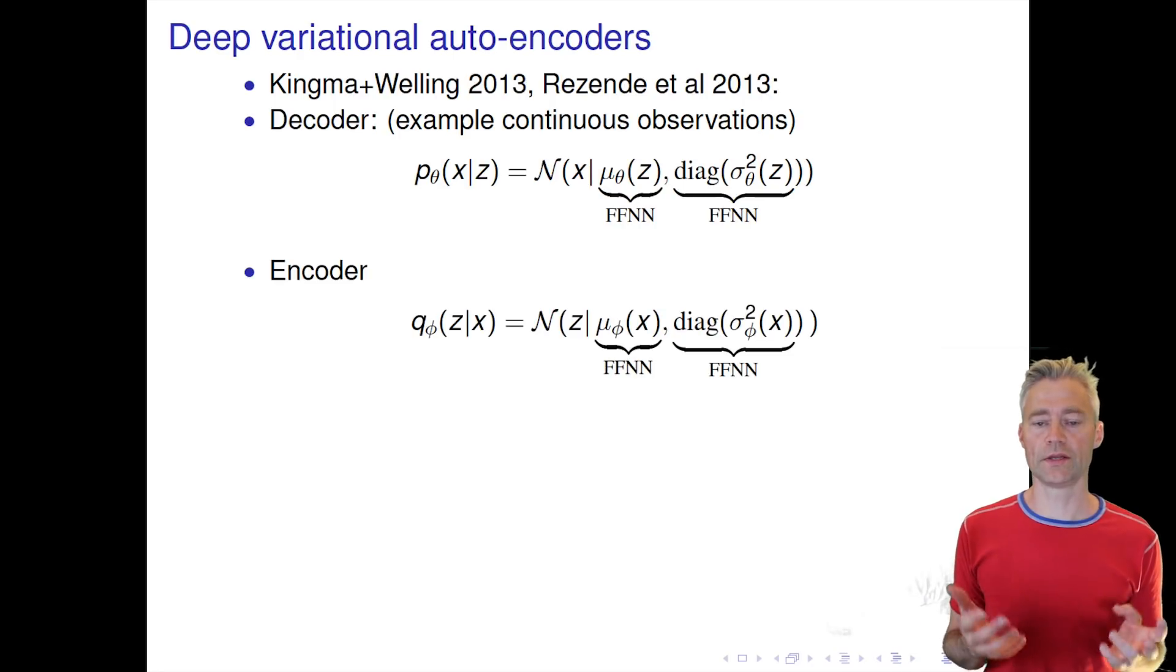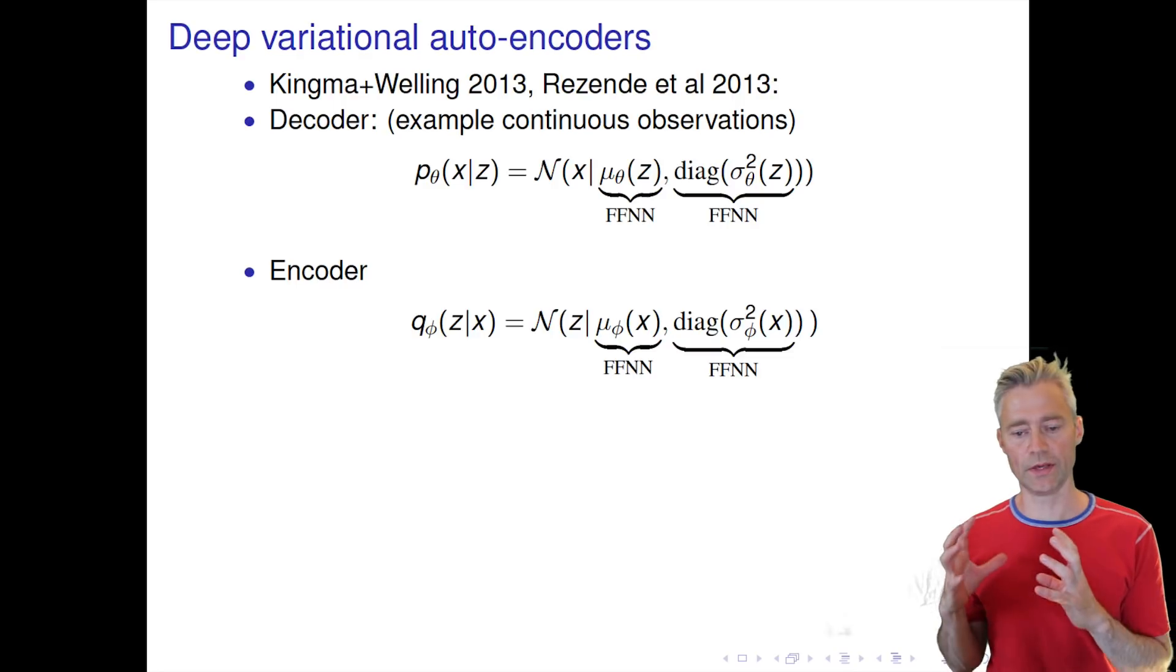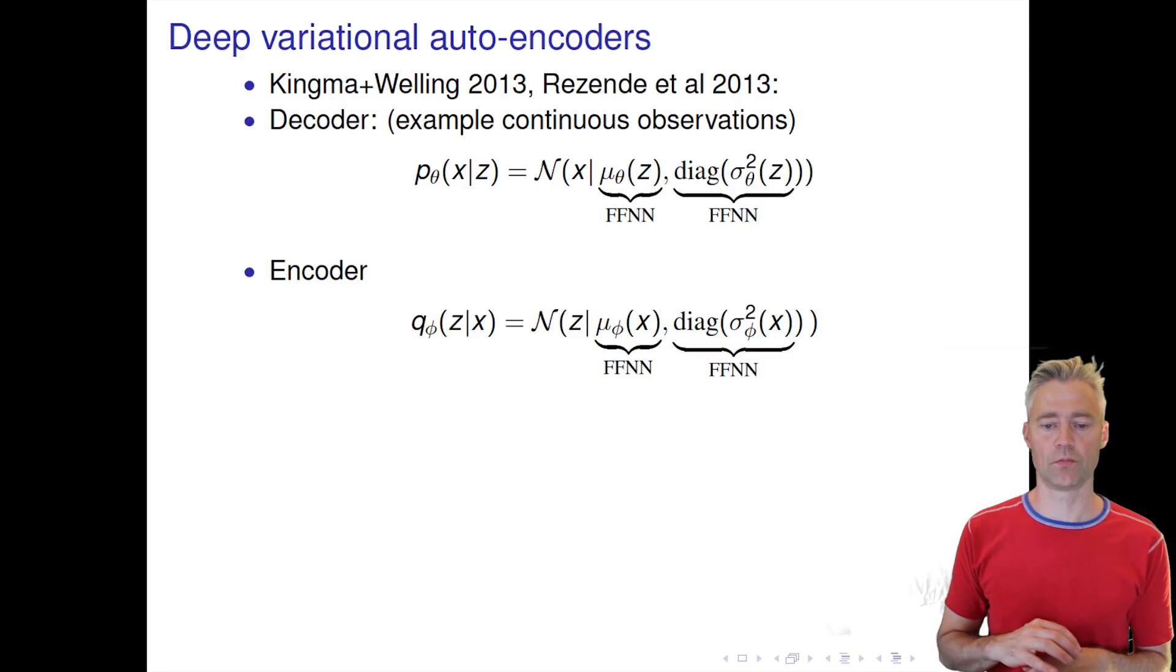Then we also need an encoder, and I'll show you very soon why. We can represent it in the same fashion as a mapping from the input to a mean and a variance for c.